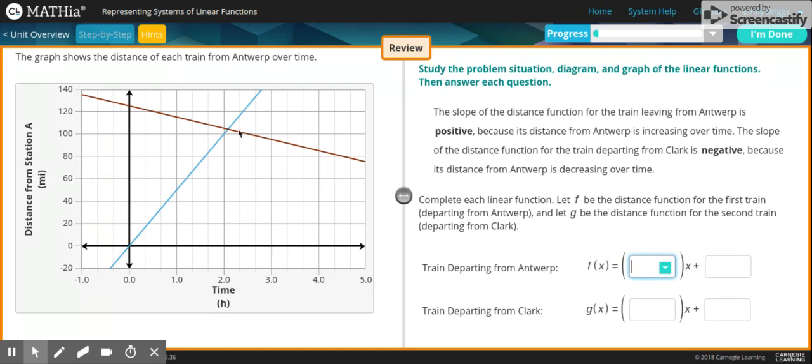So complete each linear function. Let f be the distance function for the first train departing from Antwerp. And let g be the distance function for the second train departing from Clark. So you have to find your intervals. And so you have to find what it's decreasing by and then the slope.